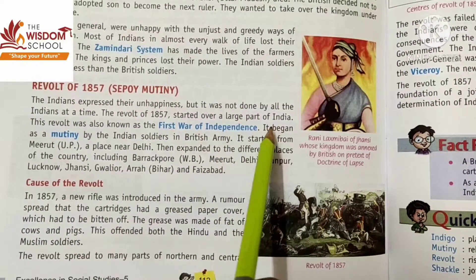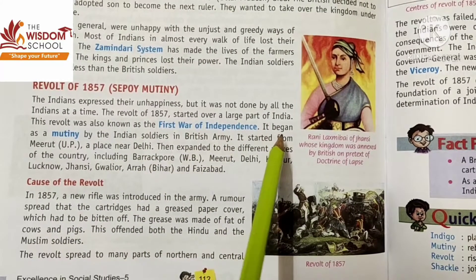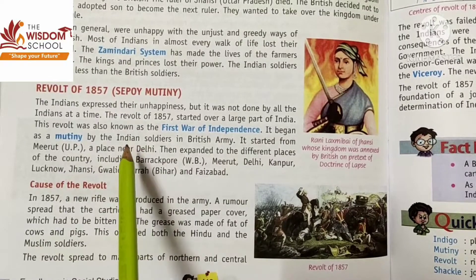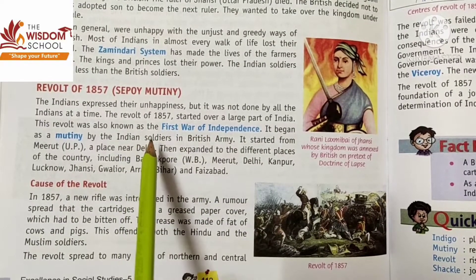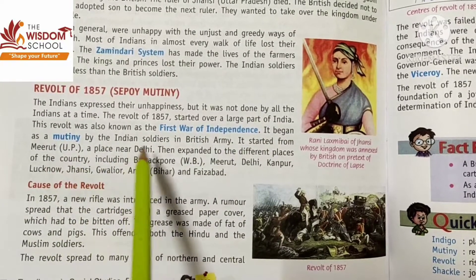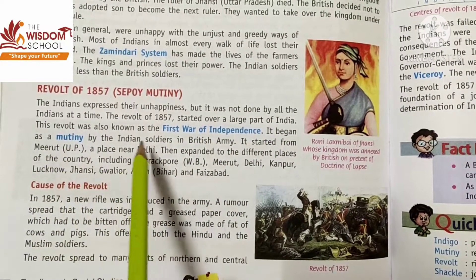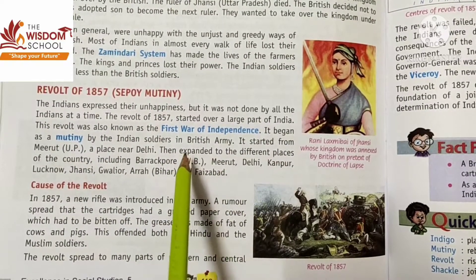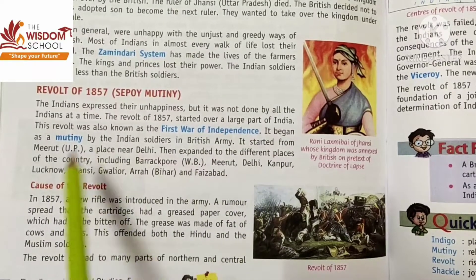This revolt was also known as the First War of Independence. It began as a mutiny by Indian soldiers in the British army — the Indian soldiers who were in the British army started it. It started from Meerut, a place near Delhi, and then expanded to different places.